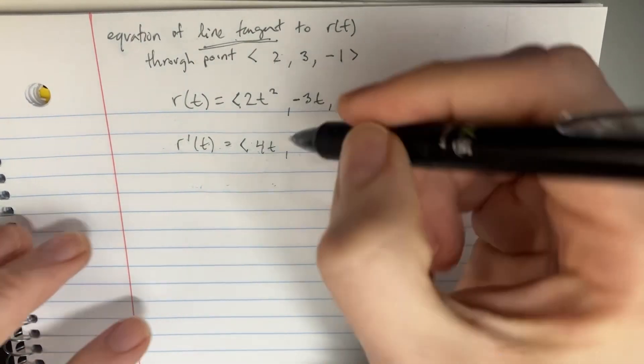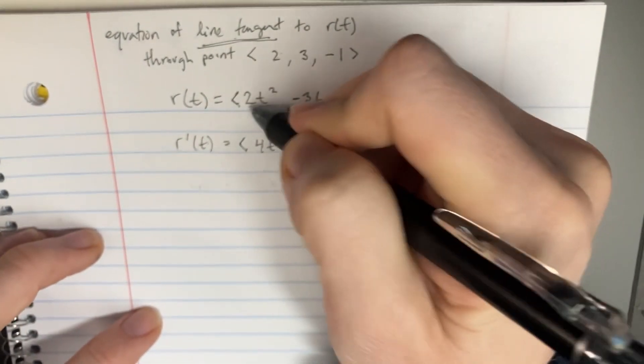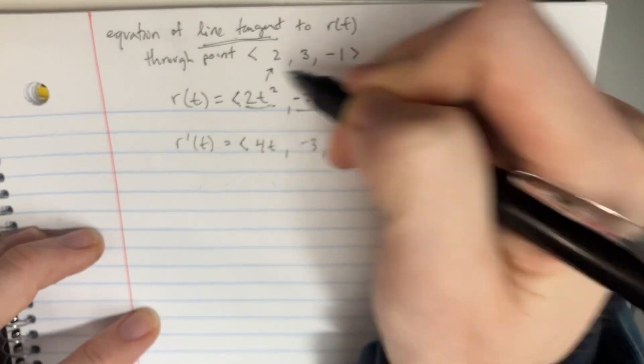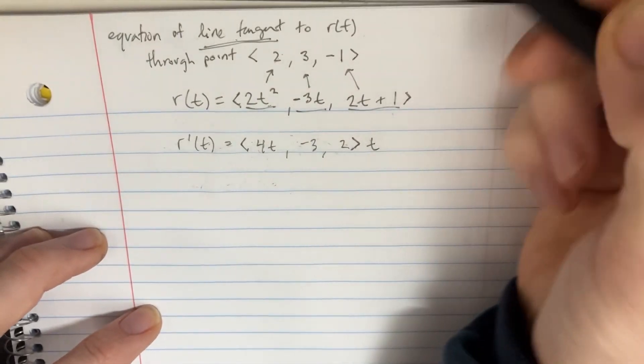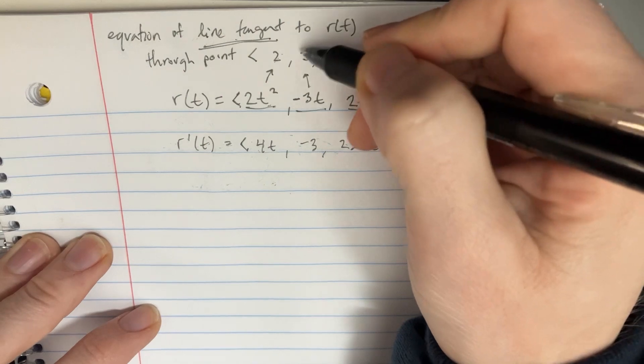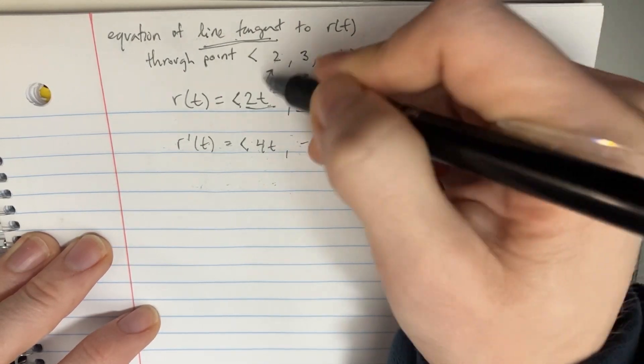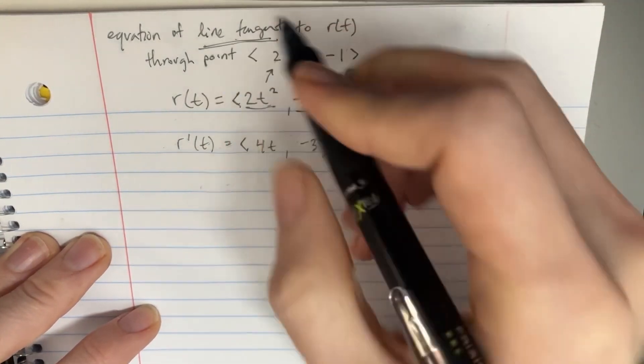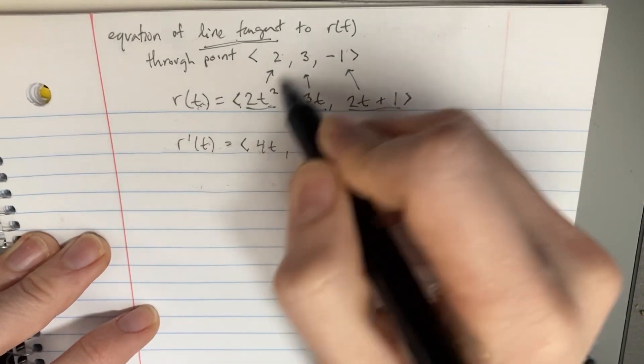We'd have to actually figure out what point satisfies this equation right here. So what we need to do is we set these things equal to each other. And if we do that, we're actually going to find out that the t value that would work through this point, we actually have to find this thing has to go through that point as well.